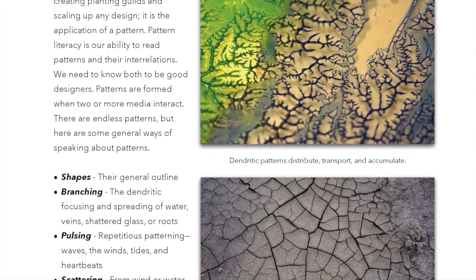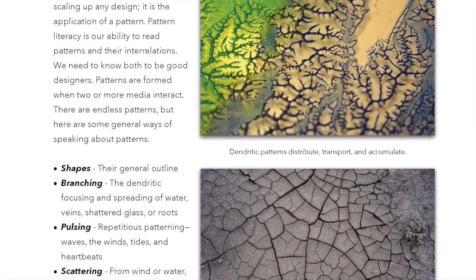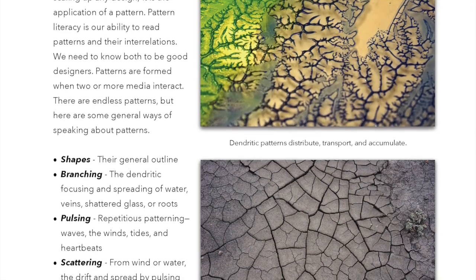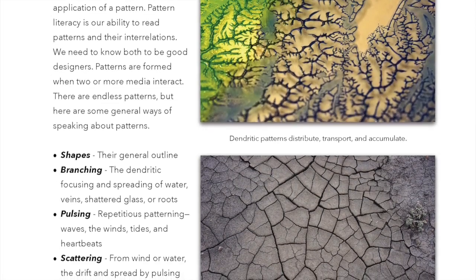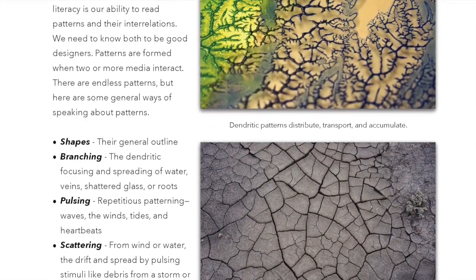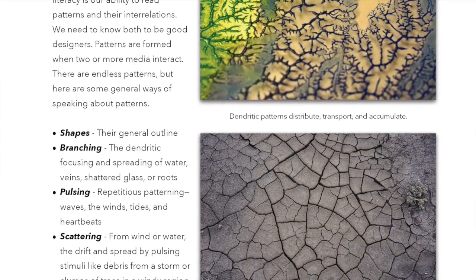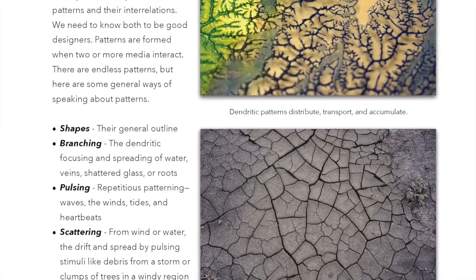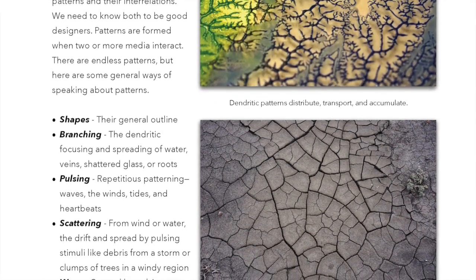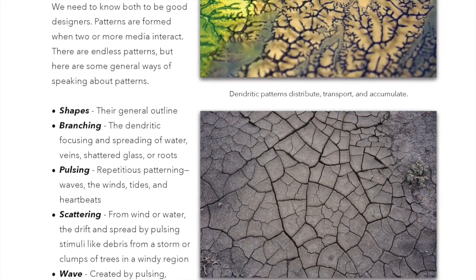Shapes: their general outline. Branching: the dendritic focusing and spreading of water, veins, shattering glass, or roots. Pulsing: repetitious patterning — waves, the tides, winds, and heartbeats.